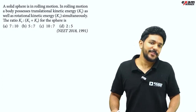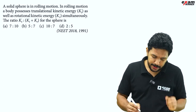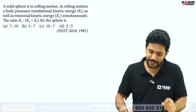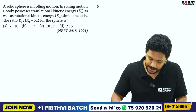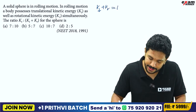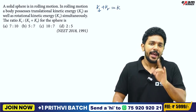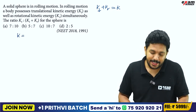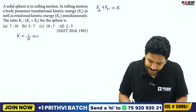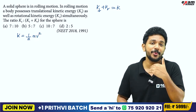How do we approach this? A solid sphere is rolling. The total energy is translational kinetic energy plus rotational kinetic energy. Translational kinetic energy is half mv squared, where v is the center of mass moving velocity.